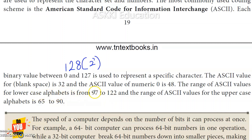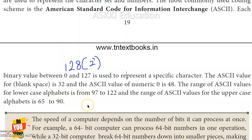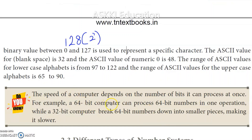The ASCII value for lowercase 'a' is 97, 'b' is 98, 'c' is 99, and so on up to 'z' which is 122 — covering all 26 lowercase letters. For uppercase letters, capital 'A' is 65, 'B' is 66, 'C' is 67, continuing up to capital 'Z' which is 90. The speed of a computer depends on the number of bits it can process at once — that is our word length. A 64-bit computer processes 64-bit numbers in one operation, while a 32-bit computer must break 64-bit numbers into two 32-bit parts.